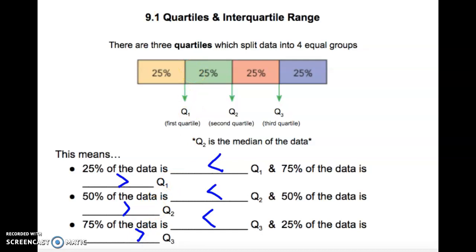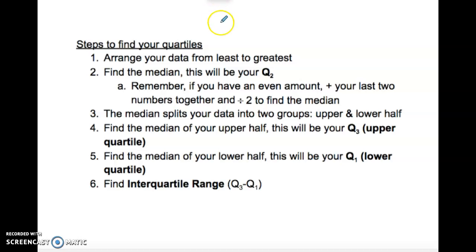So now that we took a look at how the data is split up using our quartiles, let's go through the steps to find quartiles. So if we're given a bunch of data, the first thing we want to do is to arrange the data from least to greatest. Then we're going to find the median, which is our Q2. So that's the middle number. If you have two middle numbers, you have to find the average of the two numbers. So you add those two numbers together and then divide by two. Once you have the median that splits your data into two groups, an upper half and a lower half.